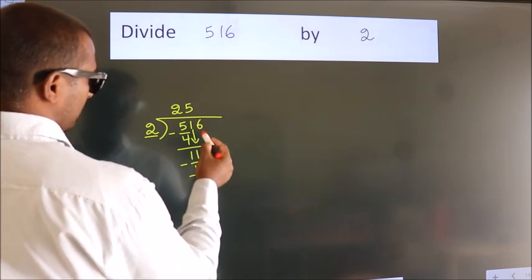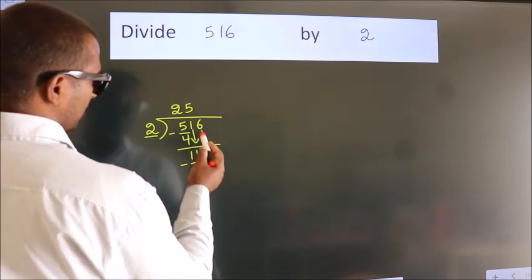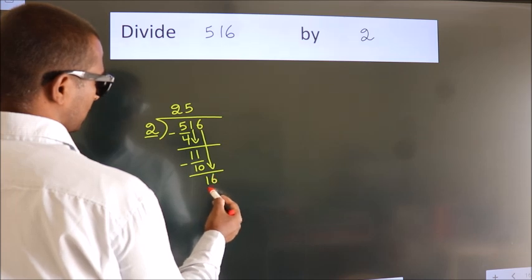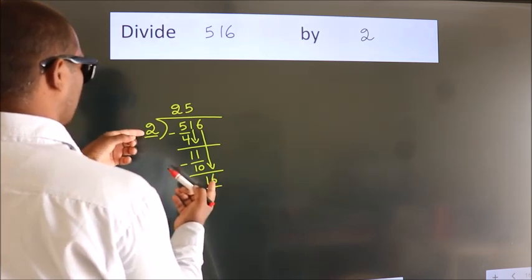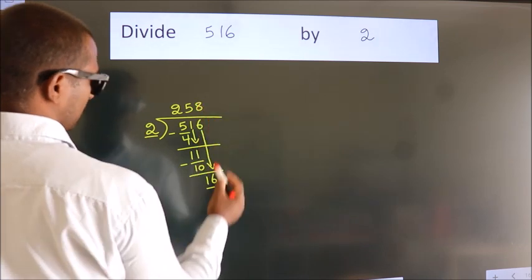After this, bring down the beside number. So 6 down, so 16. When do we get 16? In 2 table, 2 times 8 equals 16.